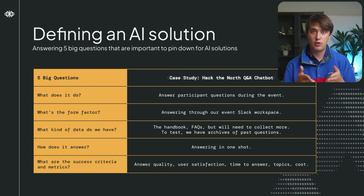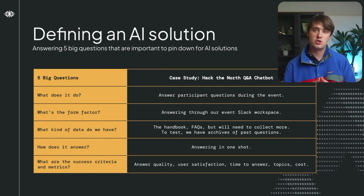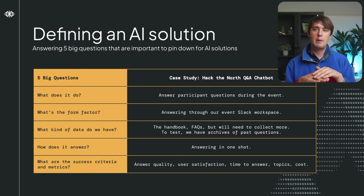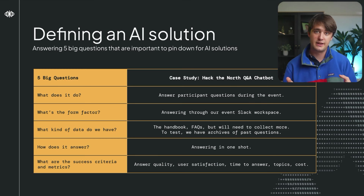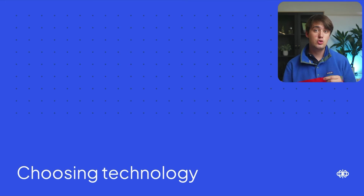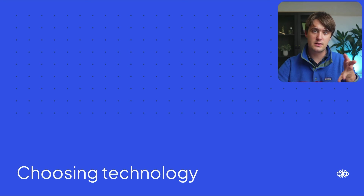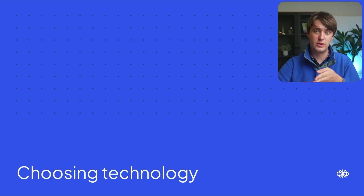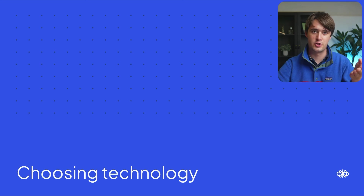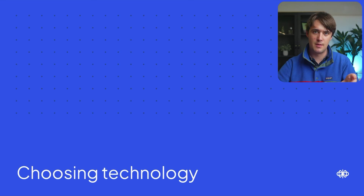Through these five big questions, we'll be able to pinpoint important information about what our solution will actually look like. I strongly recommend asking yourself similar questions and thinking about other kinds of questions that will have an impact on what the solution looks like in the end. Next up, we have to choose what technology we're going to use to bring our AI solution to life.